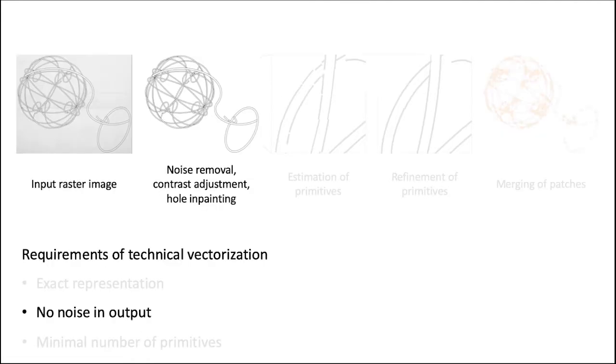Application of the primitive extraction network alone to the real-world corrupted raster input would require the corresponding training dataset with pairs of real-world corrupted raster images and accurate vector reconstructions. Collection of such dataset is extremely difficult, so instead, we employ the preprocessing step designed to remove the artifacts from the input image and make it similar to the clean images on which we train the primitive extraction network.